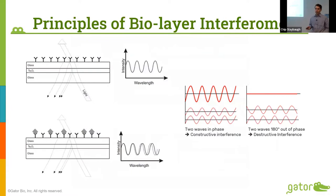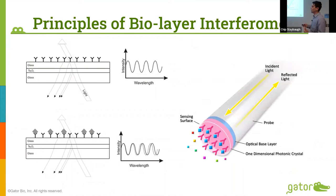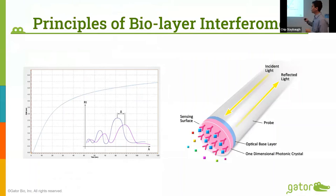The instrument uses biolayer interferometry, based on a phenomenon found about 30 years ago by Professor Galwitz. His team created thin films and immobilized antibodies onto the film. When they shined light from the bottom and detected the reflection, they saw an interference pattern — intensity versus wavelength. When an analyte was introduced that bound to the immobilized antibody, they saw a shift in the interference pattern. We use this physics phenomenon on the surface of a probe tip, and in real time, as binding events occur, you can see the shift displayed as a change versus time.